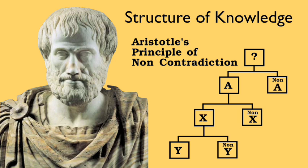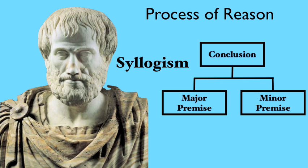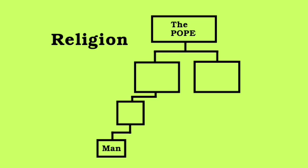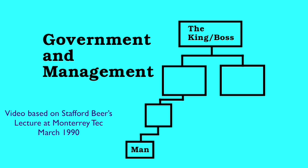Aristotle is the creator of the non-contradiction principle, which says that something cannot be two things at the same time. It has prevailed as the process for acquiring knowledge. Also from Aristotle, we get the process of reason and the syllogism. Theology is built following the same process, and the Catholic Church borrows from the same source. Eventually, kingdoms and businesses find the same solution.